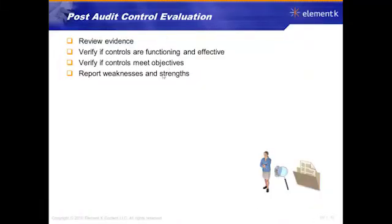As we're preparing to do our post-audit control evaluation, we are going to review the evidence. We're trying to verify if the controls — the policies, procedures, technical, software, hardware, physical, environmental, whatever they put in place — are functioning, are they effective, are they meeting business objectives. That's really the bottom line: do they have controls, are they meeting business objectives, and are they being implemented effectively or properly, or are they just not meeting the objectives?